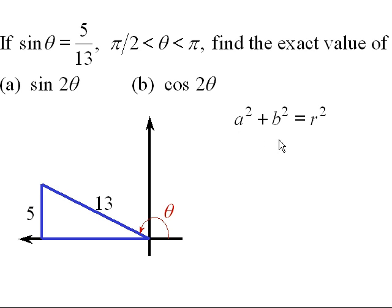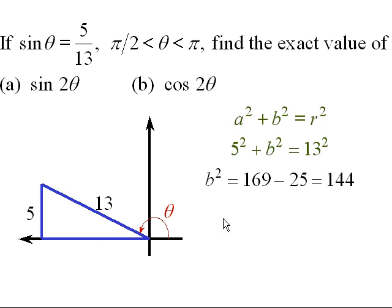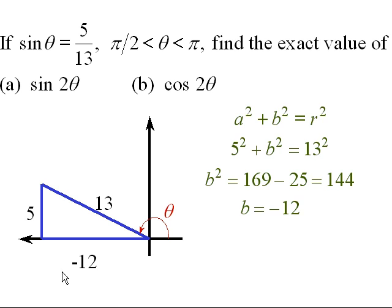To find the missing side, we'll use the Pythagorean theorem: a squared plus b squared equals r squared. This is a five-twelve-thirteen triangle, so b squared is one hundred forty-four, meaning the missing leg has length twelve. Since the reference triangle is positioned going in a negative horizontal direction, we take minus twelve as the appropriate value. So sine theta is five thirteenths (given), and cosine theta is minus twelve thirteenths.